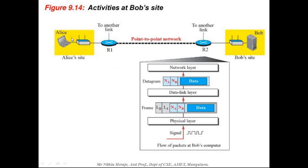This is the process happening in ARP. We now know how the transmission happens from Alice to router 1, router 1 to router 2, router 2 to Bob, and what happens at Bob. The simple concept is that data has to be transferred from Alice to Bob, and we know the different steps happening in ARP. This is quite an important concept, so please concentrate.